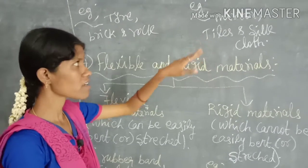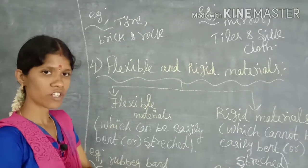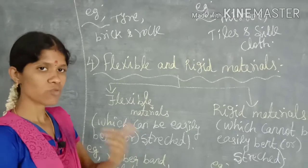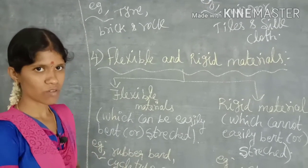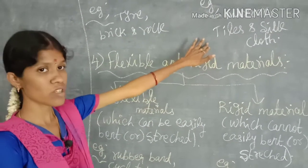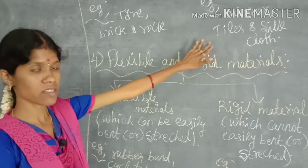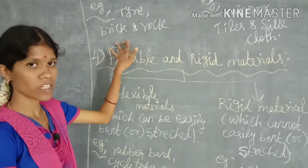In the case of tiles, we can't differentiate which one is the up surface or the down surface. So tiles belong to the smooth materials, while tire and brick belong to the rough materials.